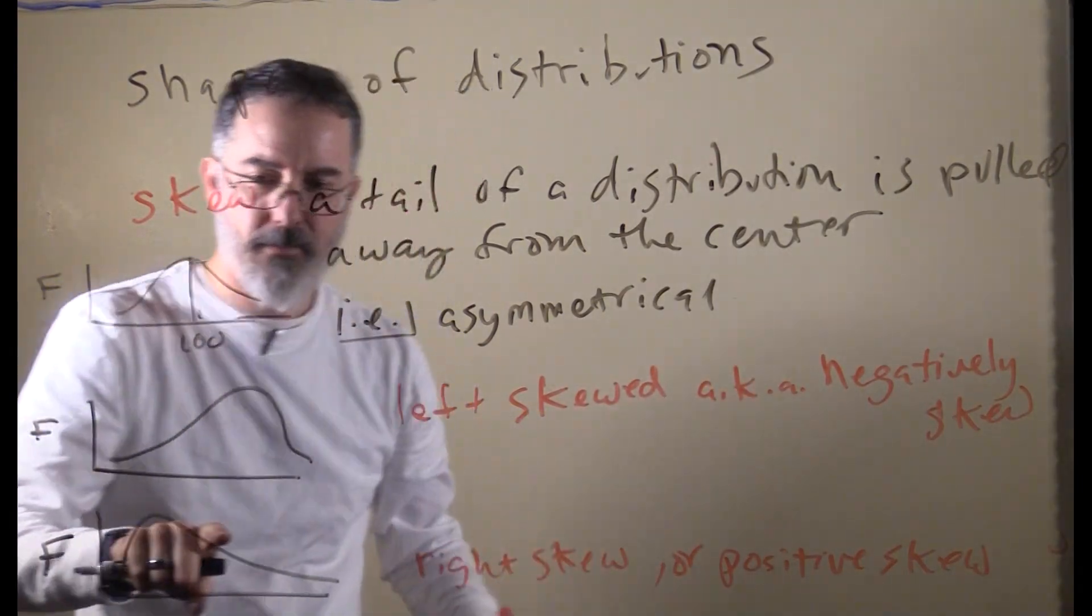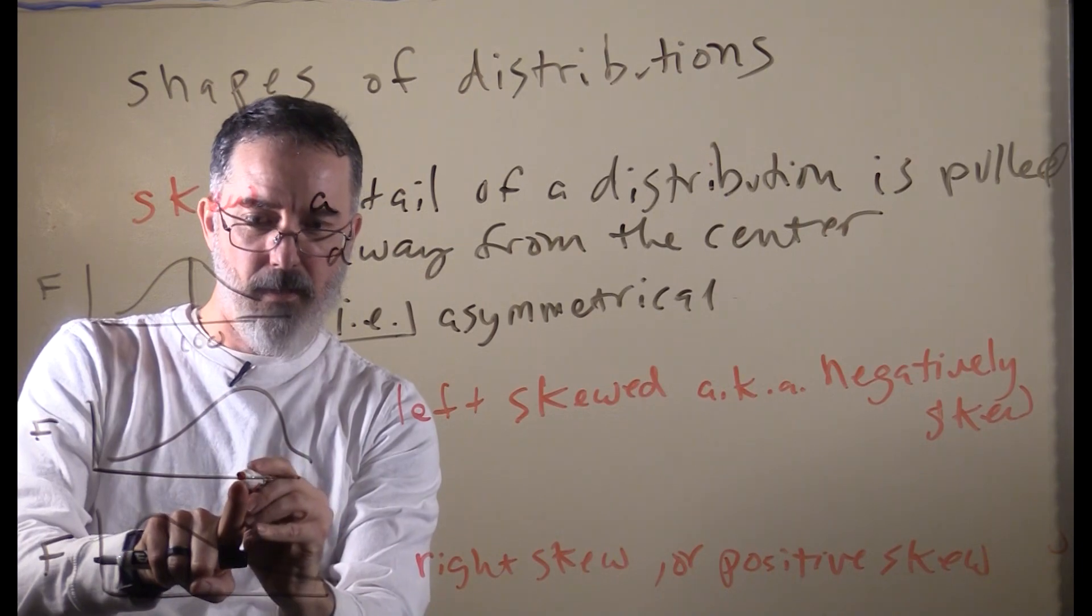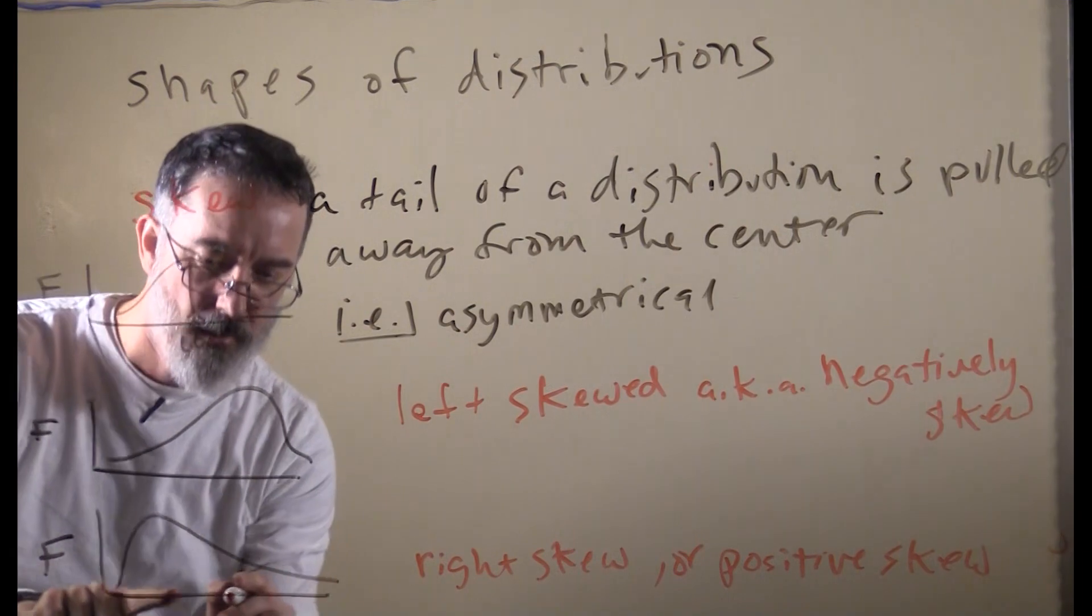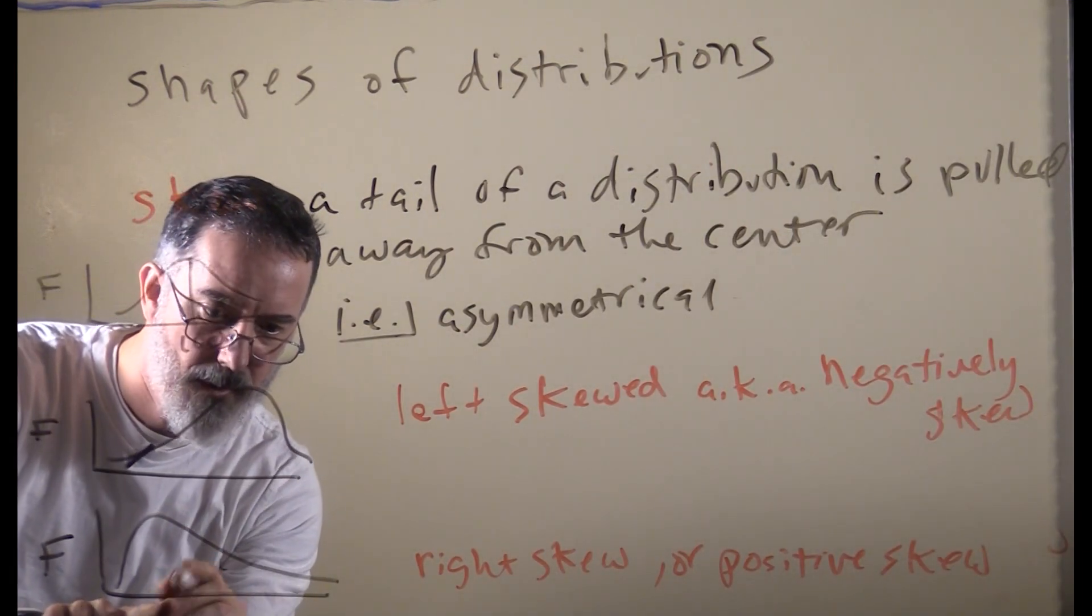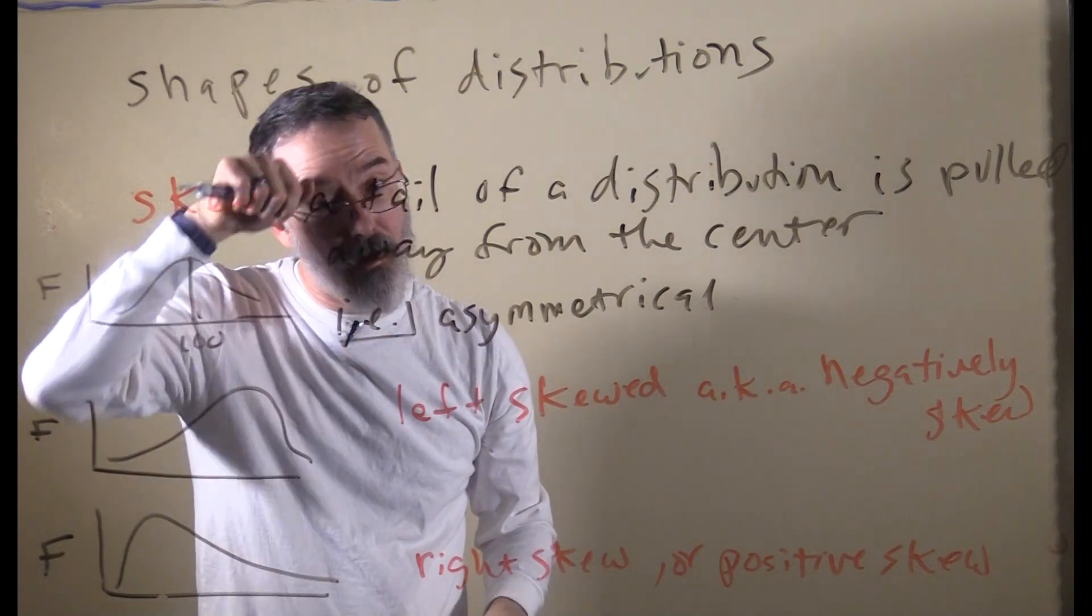One way to remember positive versus negative skew is if there were a zero at the mean, the tail is extra out in the negative values. And if there was a mean of zero here, the tail is out in the positive values.